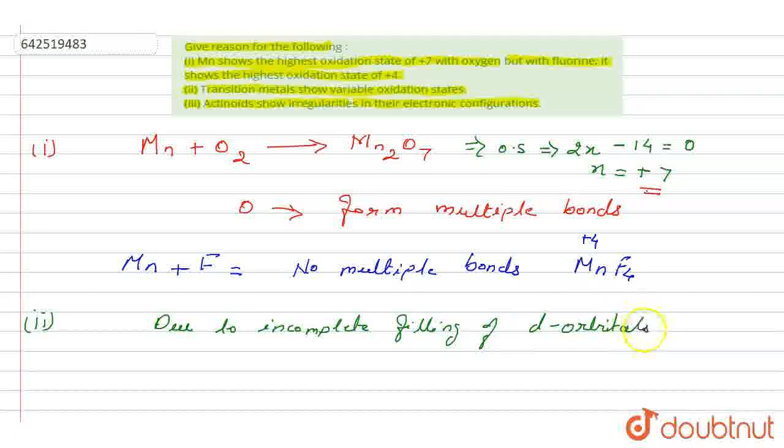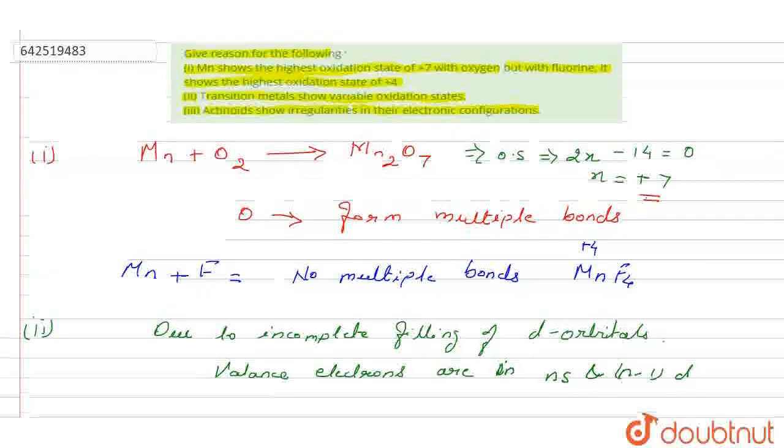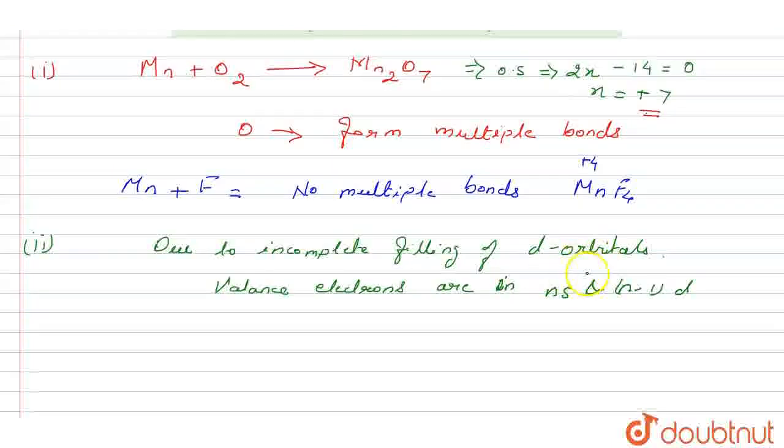Due to incomplete filling of the d-orbitals. Moreover, their valence electrons are present in ns and (n-1)d orbitals, because they both are involved in bond formation. As they consist of similar energy, these orbitals with almost similar energy participate in bond formation.